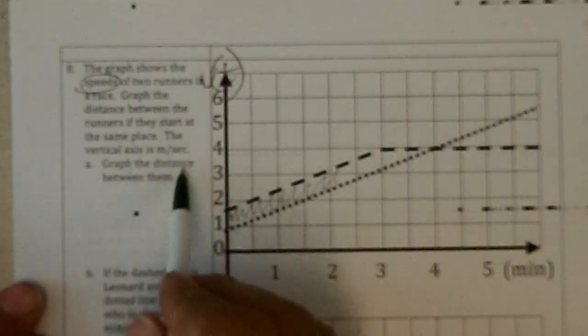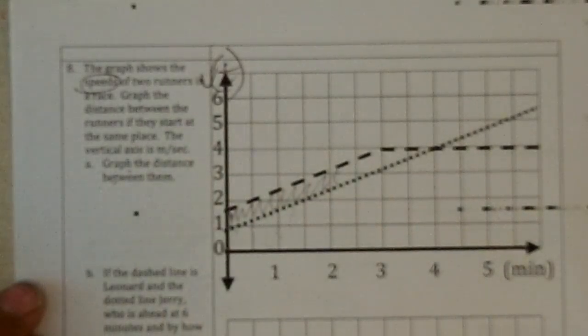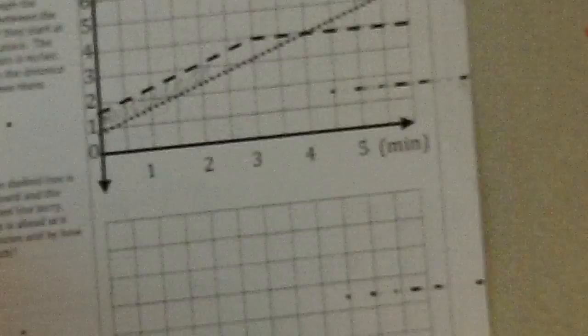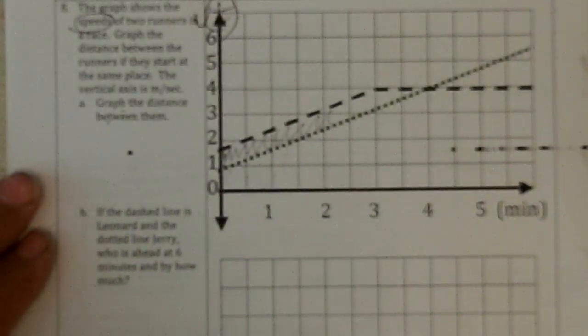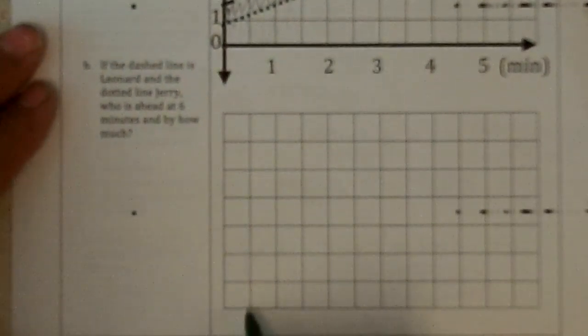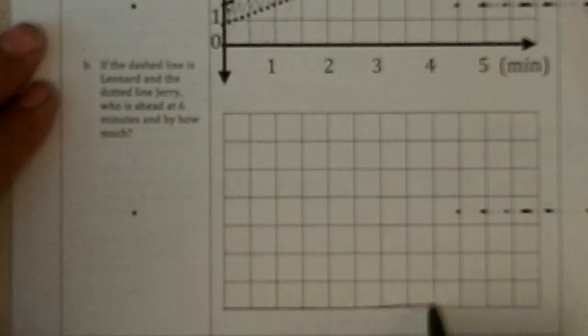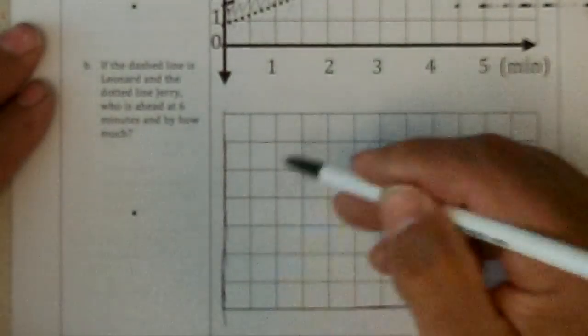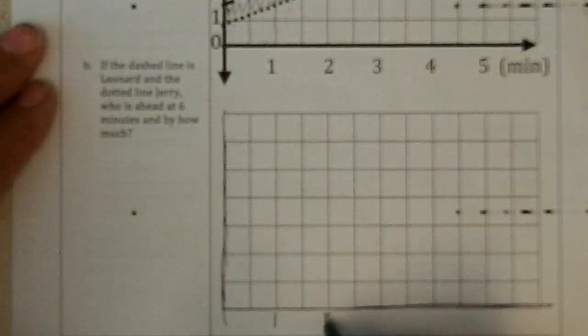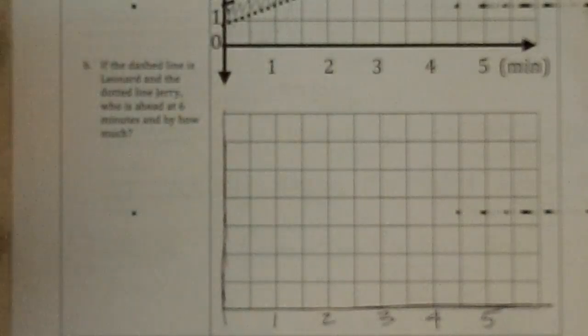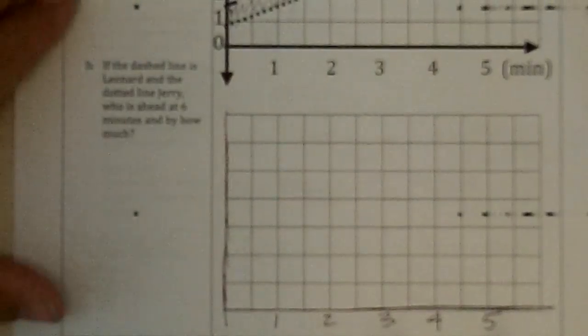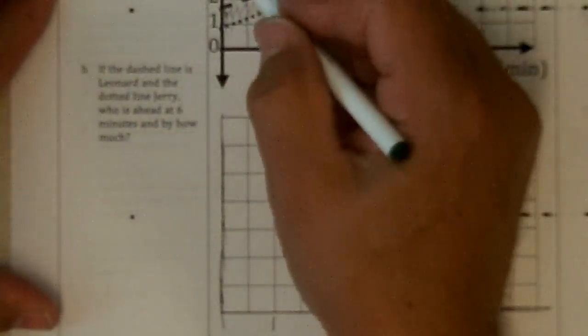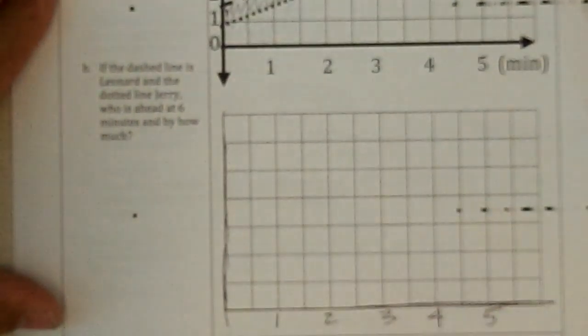And if they start at the same place, and we're supposed to graph the area between, then I would start my graph, make my graph start at the same place, put the same units. These are in minutes. So this is the longer race, mile-ish or some more. And this is their speed in meters per second.